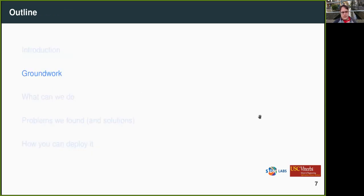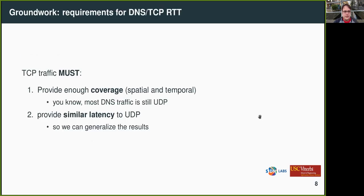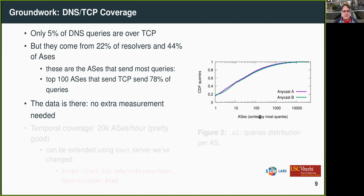Before applying the technique, there's groundwork to do. The requirements are that TCP traffic must provide enough coverage — both spatial and temporal — meaning you want TCP traffic to be representative of your UDP traffic. It turns out a very tiny fraction of queries are sent over TCP: 95% is UDP, 5% is TCP. But in our results, they come from 22% of the resolvers and 44% of the ASes. These are the ASes that send most traffic — the top 100 ASes send 78% of queries, so traffic is very concentrated in DNS.